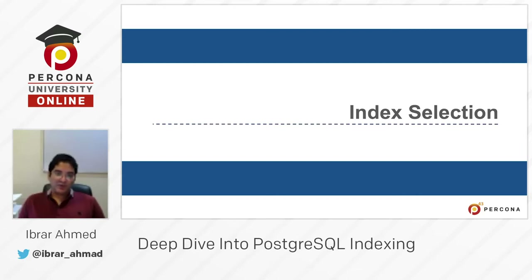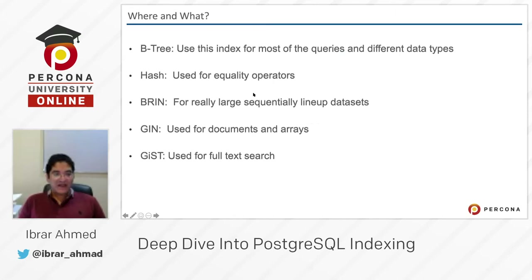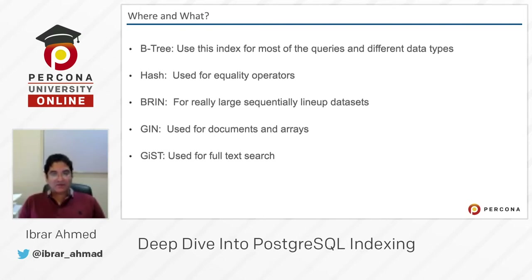We already discussed we have a B-tree index, we have a hash index, we have a BRIN index, a GIN index, and a GiST index. It's important that we should know on which data type and on which queries we can create which kind of index.